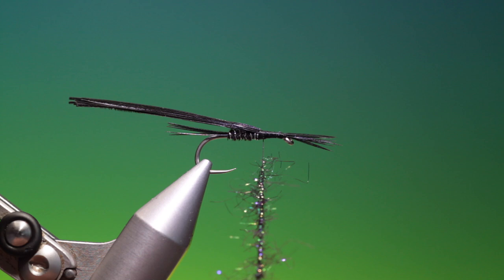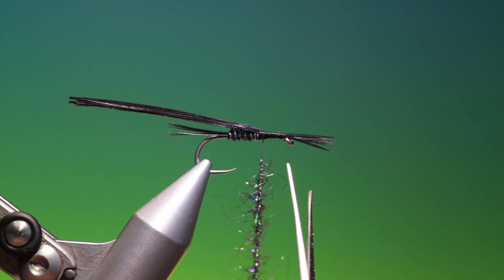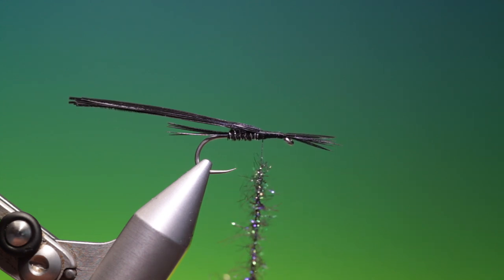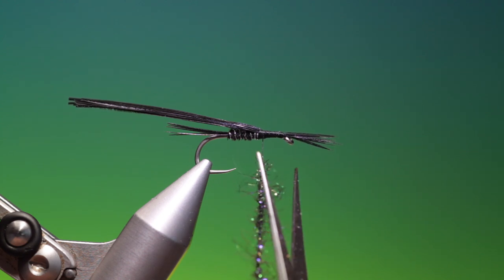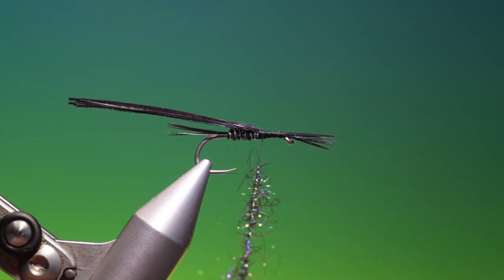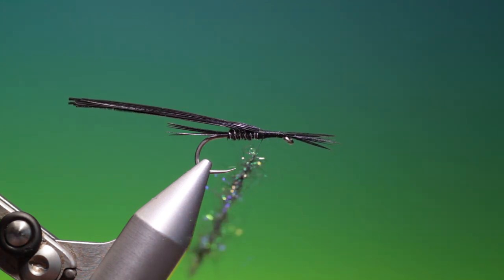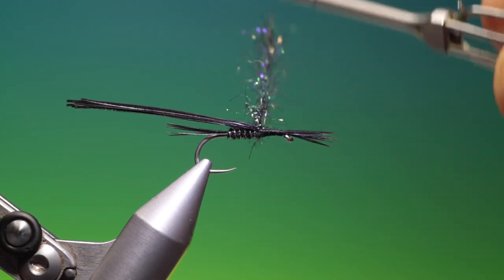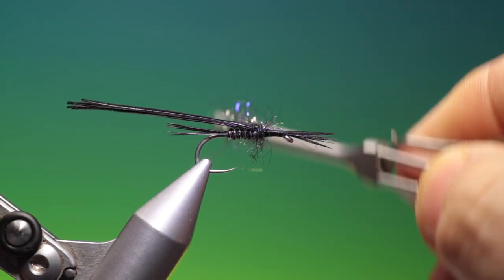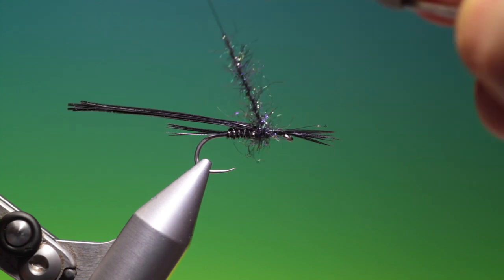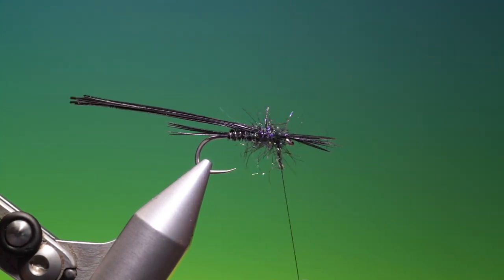We'll take a little longer scissors and we'll just trim off the longest fibres from the dubbing. We don't want it too long. That'll do me. Just tighten that up again. And then we can start at the rear with the thorax. Work our way forward.